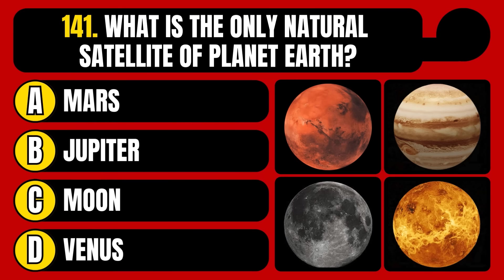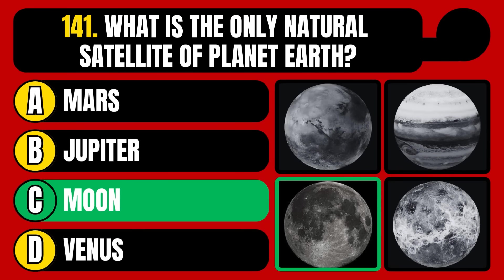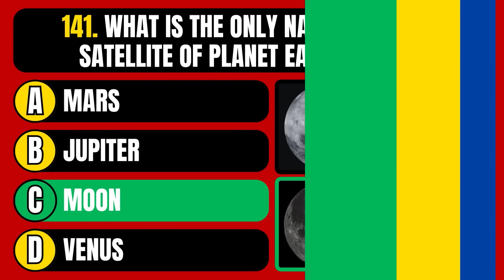What is the only natural satellite of planet Earth? Mars, Jupiter, the moon, or Venus? The correct answer is option C, the moon.